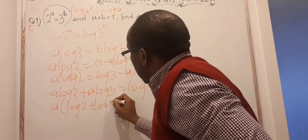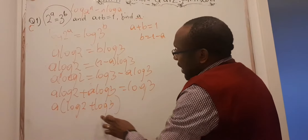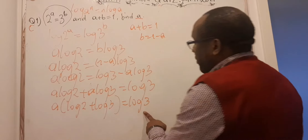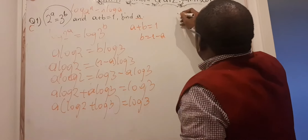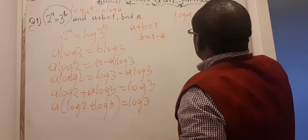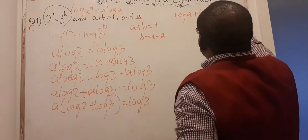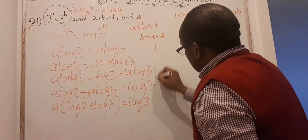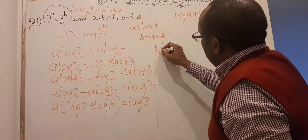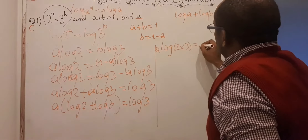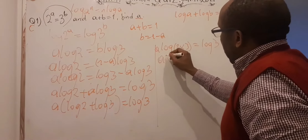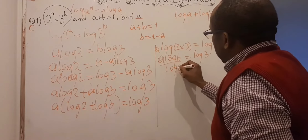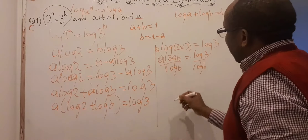You should know that when we don't write a base under the log, it means it's base 10. You would have also learned that log a + log b = log(ab). So I can combine the bracket as a product: a·log(2×3) = log 3, which gives a·log 6 = log 3. I can divide both sides by log 6, since that is different from 0, and a equals log 3 divided by log 6.